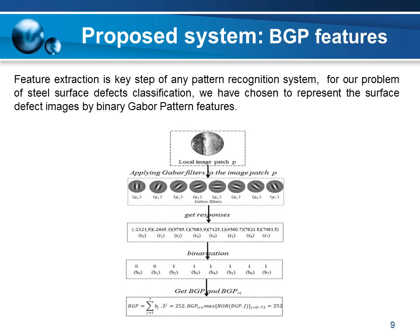Feature extraction is a key step of any pattern recognition system. For the problem of steel surface defects classification, we have chosen to represent the surface defect images by Binary Gabor Pattern features. Different from the traditional method Local Binary Pattern (LBP), BGP features are a global texture feature with a more distinguished description ability. In addition, BGP is a training-free, rotation-invariant texture feature based on the difference between two regions.